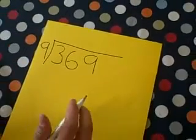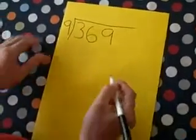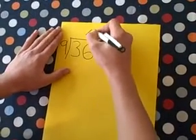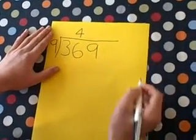So you go 9 into 36 and see how many times it can. So in this case it's 4 with no remainders.